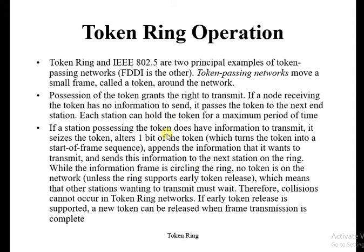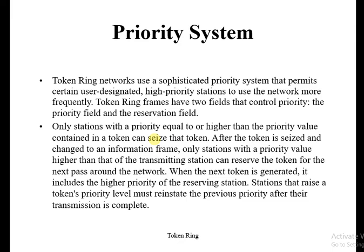To summarize token ring operations: when one token transmission is complete, a new token is sent. Only one token at a time is transmitted on the path. Token ring also has a priority system — for example, if you want to send token number five before token number three, priority is assigned to token number five so it is sent first.